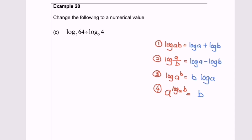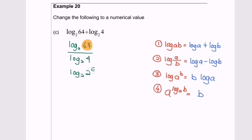Next I'm going to discuss Example 20c. We need to rewrite the expression log base 2 of 64 over log base 2 of 4. We can simplify 64 as log base 2 of 2 to the power of 6, over log base 2 of 2 to the power of 2. Applying rule 6 gives 6 log base 2 of 2 over 2 log base 2 of 2.